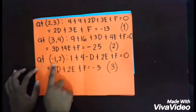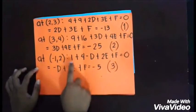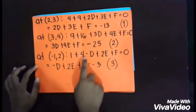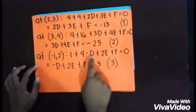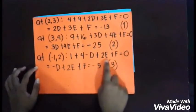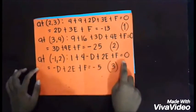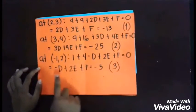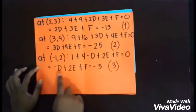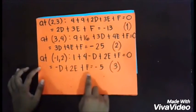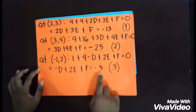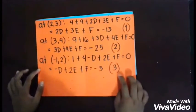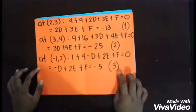At point (-1, 2): 1 + 4 - d + 2e + f = 0, which gives -d + 2e + f = -5. This is Equation 3.